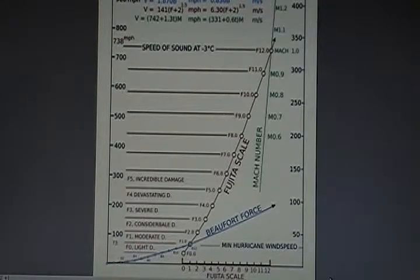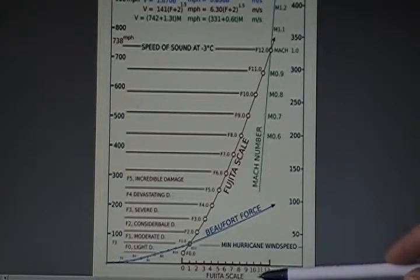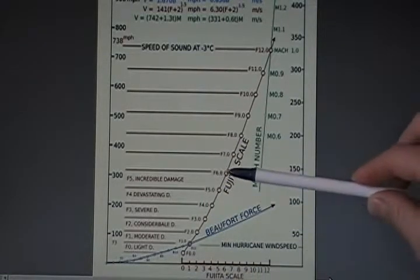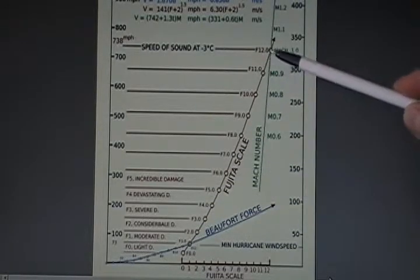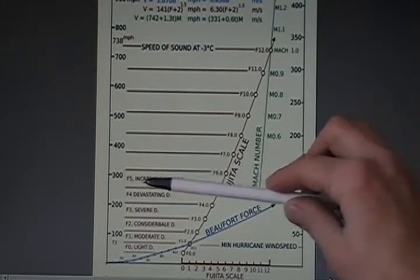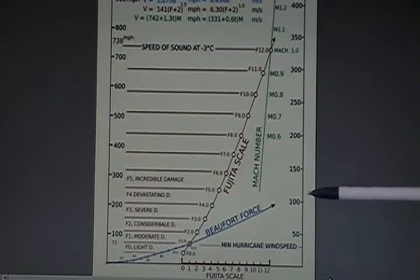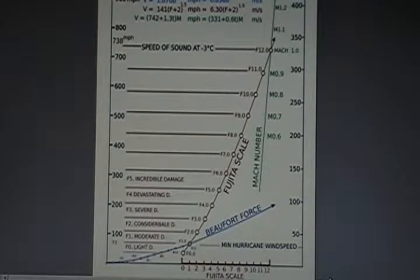The image before you puts tornadoes in context in terms of wind speeds and classification. The F scale, or the Fujita scale, ranks tornadoes in terms of their severity. We normally hear about tornadoes somewhere between F1 and F5, although the scale does go beyond that. An F5 tornado can inflict incredible damage, associated with wind speeds of 250 to 300 miles per hour, or in metric, that's 125 to 150 meters per second. Let's keep that in mind as we consider the problem at hand.